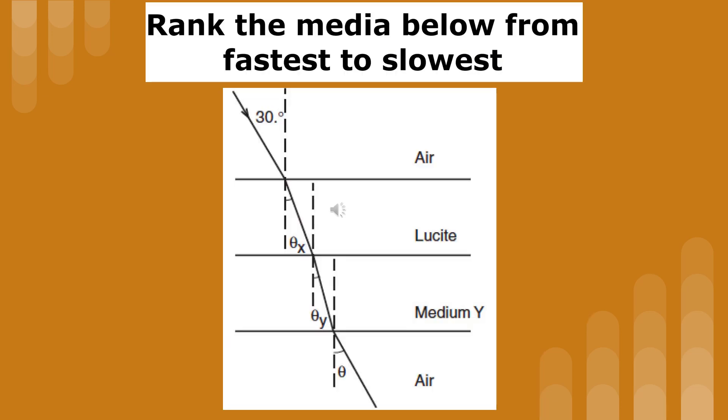In this example, light moves from air to lucite to medium Y, and returns back to air. Let's rank each medium according to the speed. In order to find the fastest medium, we look for the biggest angle. Since the angle in air is the biggest, it's the fastest. Since medium Y has the smallest angle, it's the slowest.